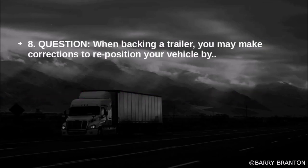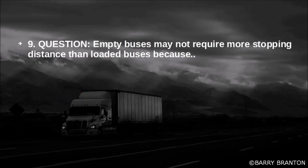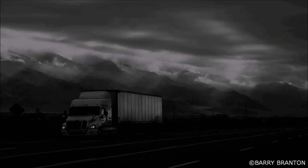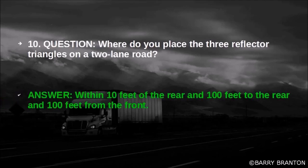When backing a trailer, you may make corrections to reposition your vehicle by pull-ups. Empty buses may not require more stopping distance than loaded buses because they usually have as much braking power when empty as when loaded. Where do you place the three reflector triangles on a two-lane road? Within 10 feet of the rear, 100 feet to the rear, and 100 feet from the front.